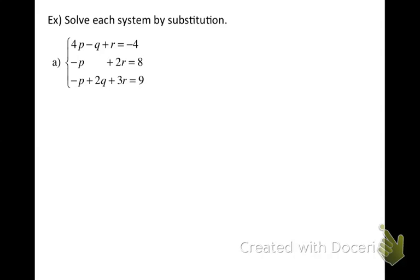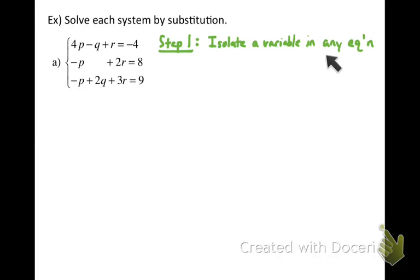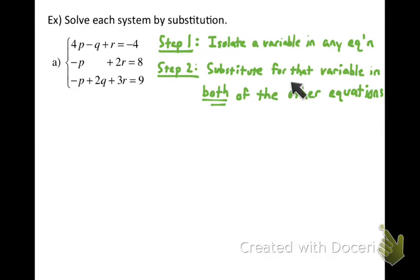Now I'm going to write down the instructions for you to follow. If you follow this process, the substitution method will work every time, granted that you're careful with copying down equations correctly and don't make silly mistakes. When using the substitution method with a three-variable system, first you want to pick any equation and isolate a variable in that equation. Then substitute whatever you get into both of the remaining equations.